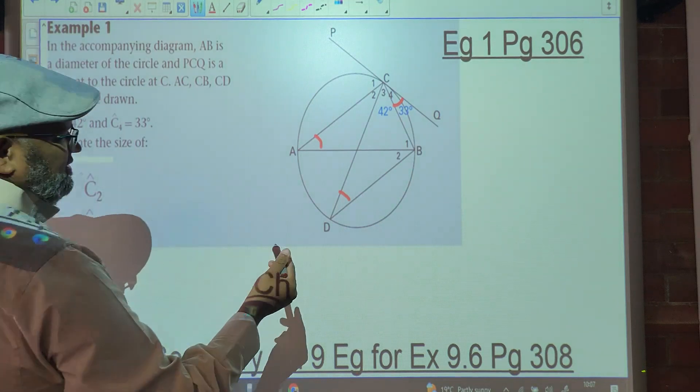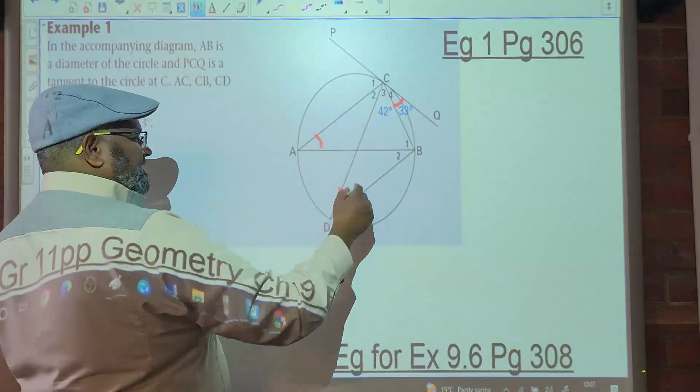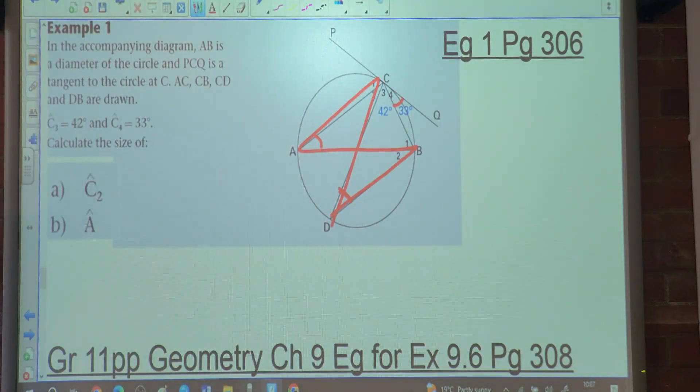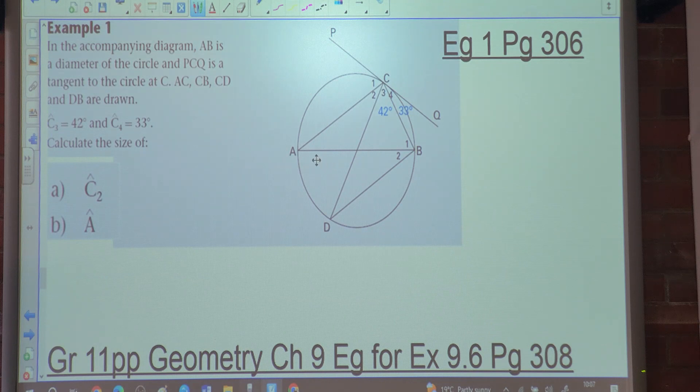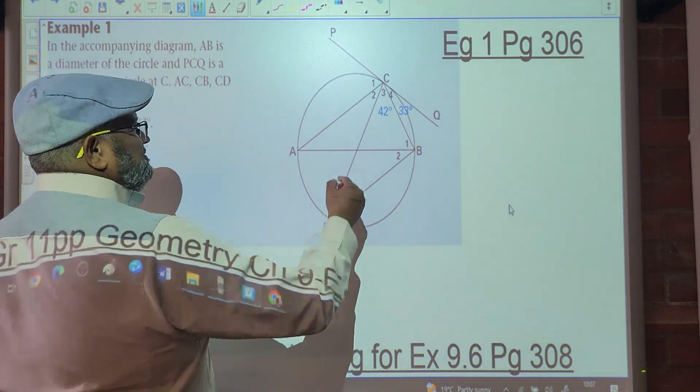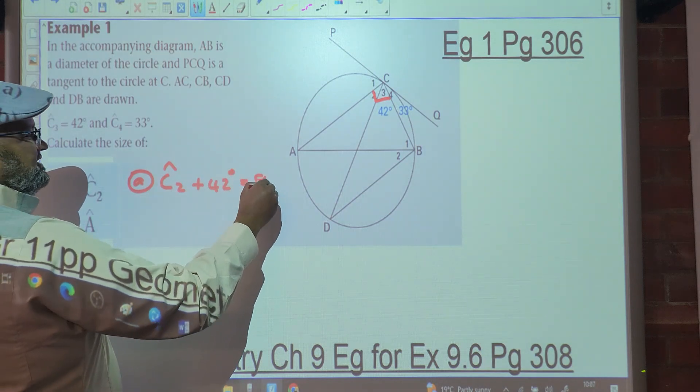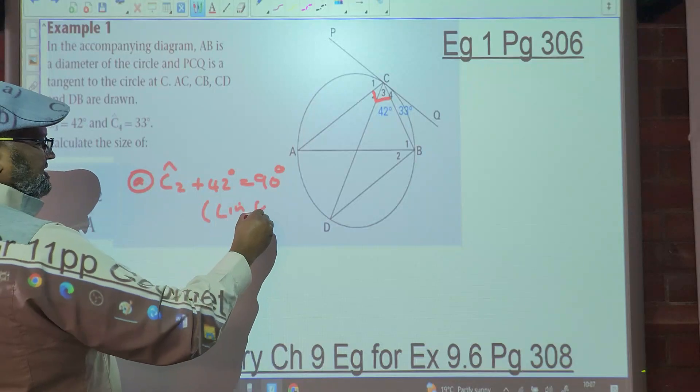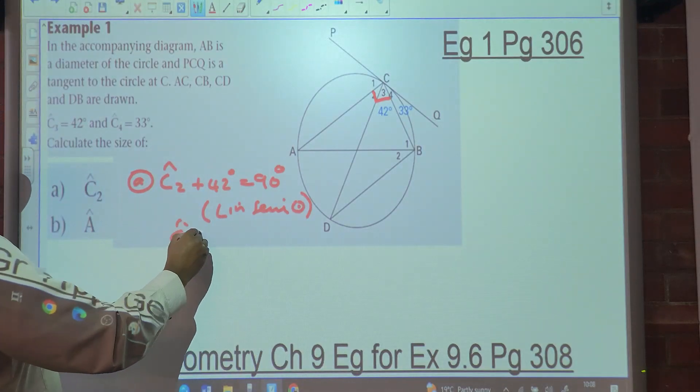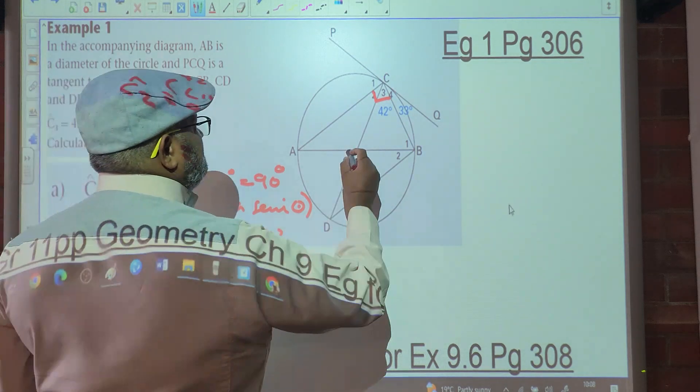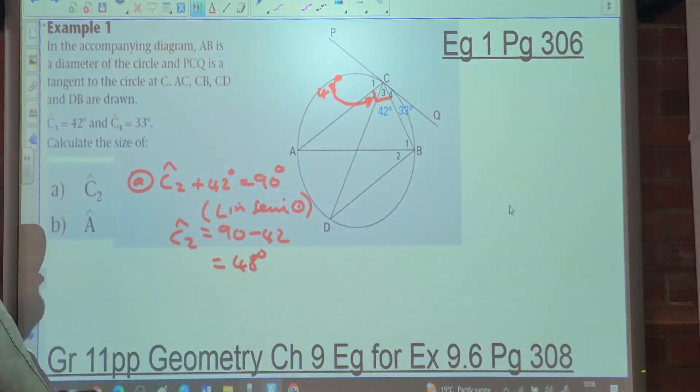Then we are told that AC, CB, CD, and BD are drawn. We are told that C3 is 42 degrees, C4 is 33 degrees. Calculate C2. So what did we say? That's going to be 90 degrees. So what are we going to say? Angle C2 plus 42 is equal to 90 degrees. Why? Angle in semicircle. Angle C2 is equal to 90 minus 42, which is 48 degrees.